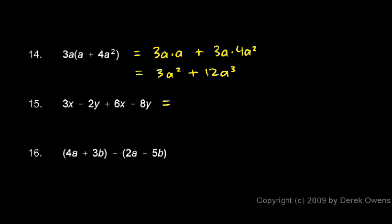Number 15, this one is again another exercise in combining like terms, but there's two different variables here. There's a 3x and a 6x - those are the x terms. And there's a negative 2y and a negative 8y - those are the y terms.